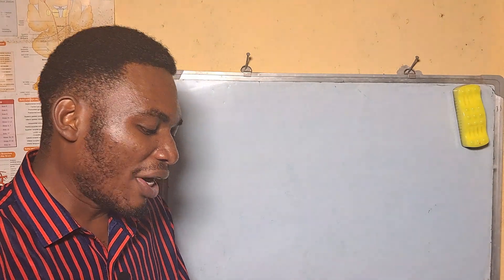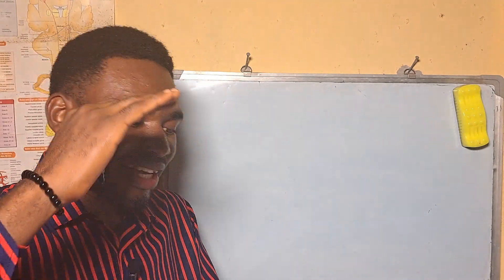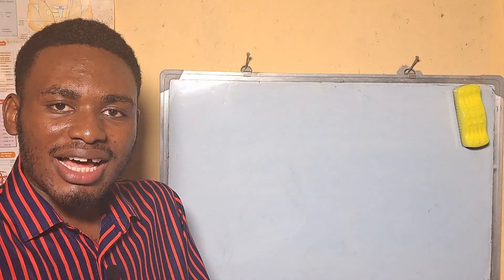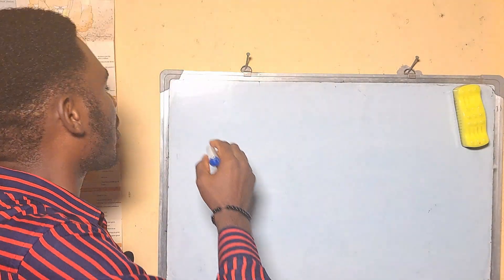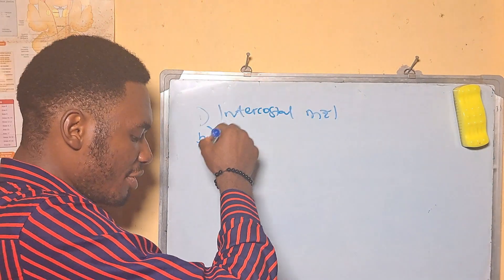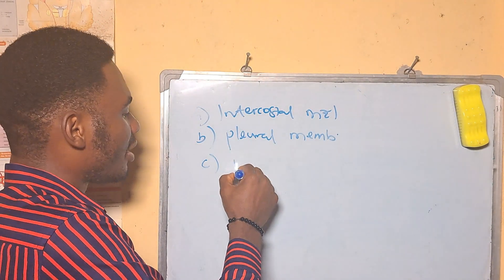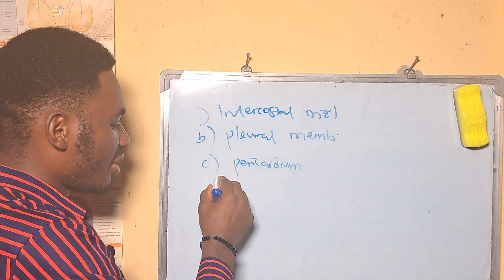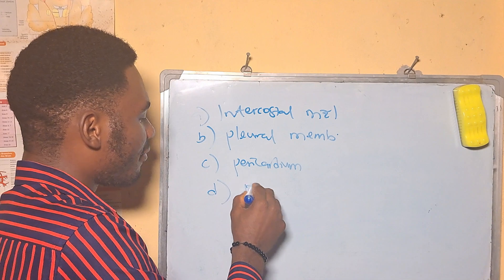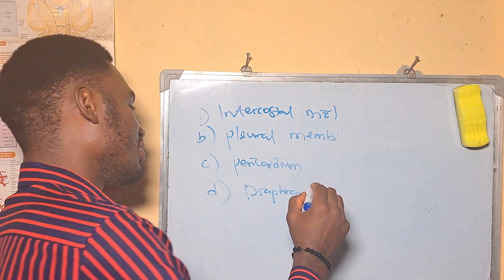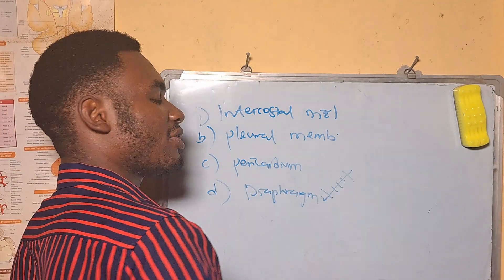The sheet of muscle that separates the thoracic cavity from the abdominal cavity is — A: intercostal muscle, B: pleural membrane, C: pericardium, D: diaphragm. Our answer is D, the diaphragm, which separates the thorax from the abdomen.